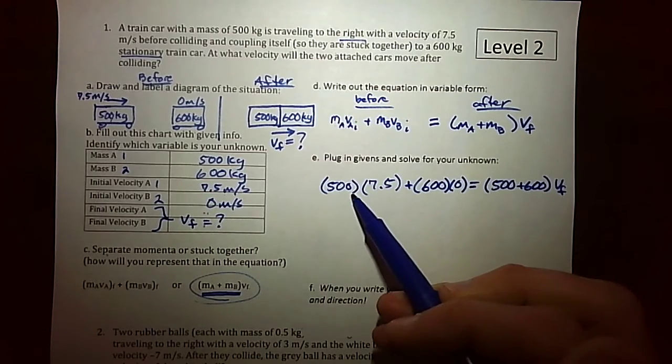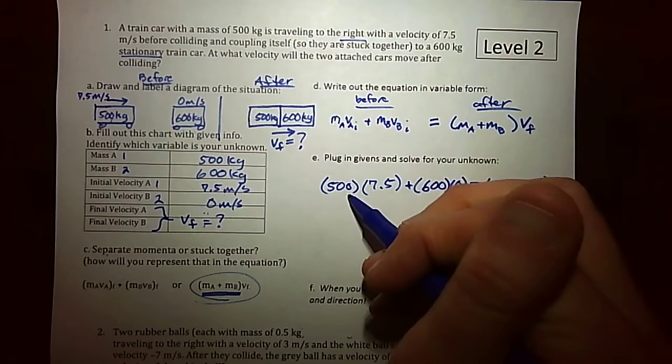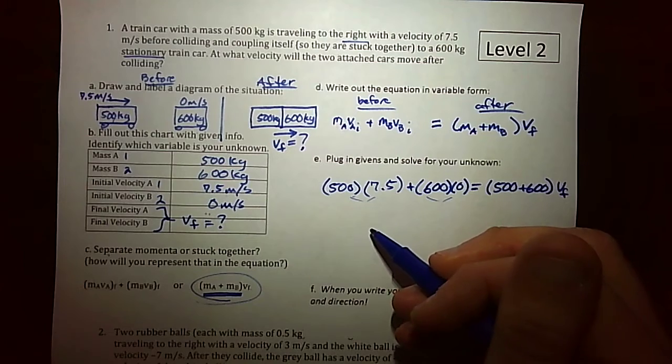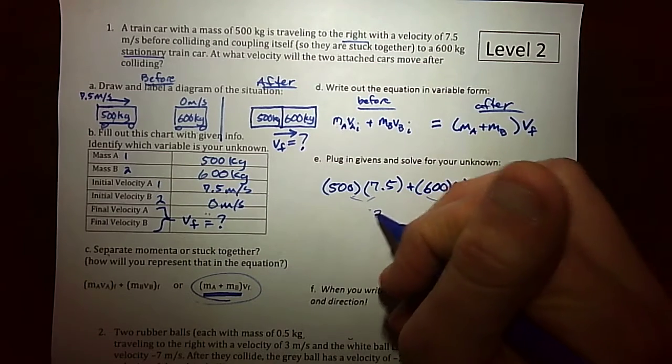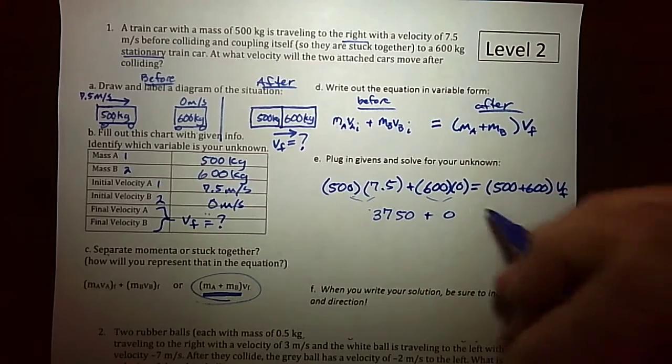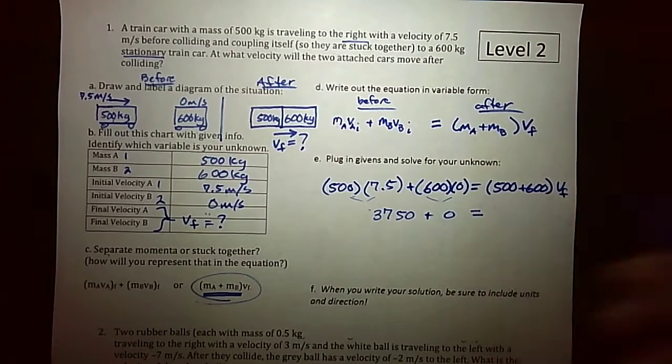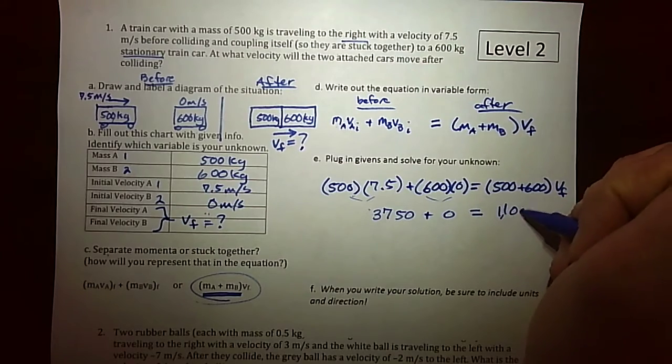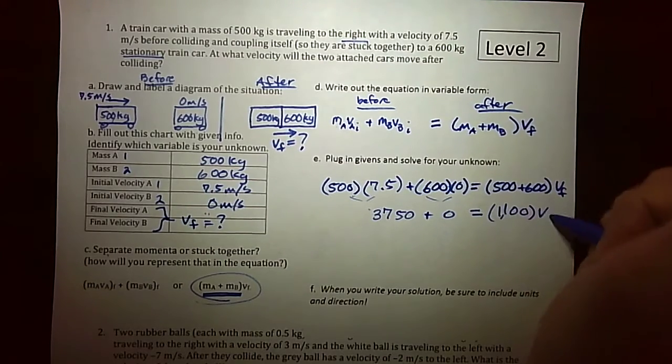So when we start to multiply these together, we multiply these together first, multiply these together, although it would just be zero, we would end up getting 3,750 plus zero is going to be equal to 500 plus 600 is 1,100 times the final velocity.